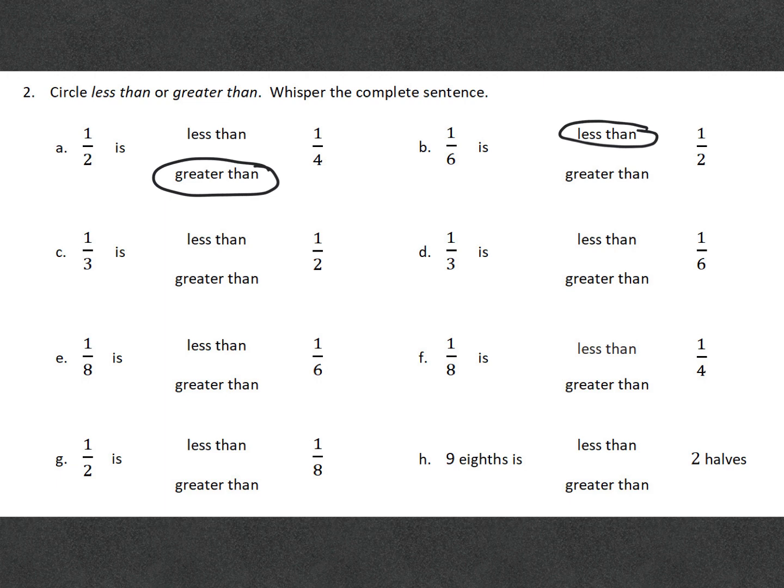C, one third is less than one half because one half is bigger than one third. D, one third is greater than one sixth because when you divide the whole into three pieces, each piece is going to be bigger than if you divide the whole into six pieces.